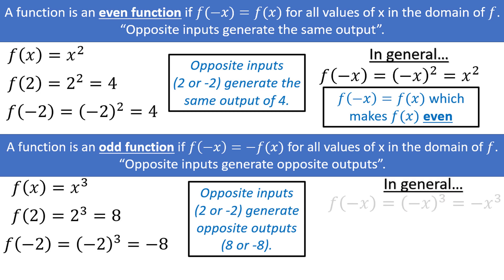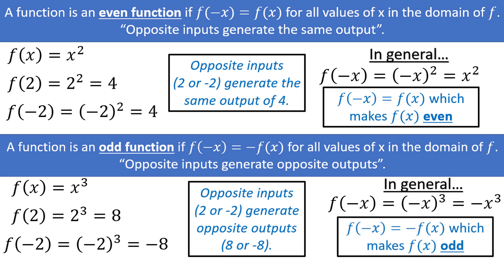More generally, f of negative x is equal to negative x to the third power, which is negative x to the third power. When we plug in the negative version of the input, we get the same function back except it's negative, which is what makes f of x equals x to the third power odd.